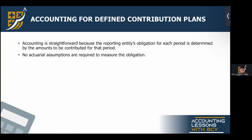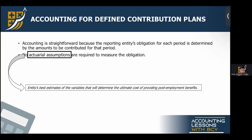For defined contribution plans, there will be no actuarial assumptions. Actuarial assumptions are the entity's best estimates of the variables that will determine the ultimate cost of providing post-employment benefits — such as demographic profile, mortality rate of employees, and financial variables like salary levels. Under defined contribution plans, we do not use actuarial assumptions. We will discuss actuarial assumptions more when we get to defined benefit plans.